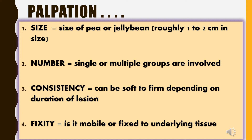Next, we will check for the number of limb node groups involved, which can either be single or multiple groups. The following would be consistency of enlarged limb nodes, which can be either soft to firm depending on the duration of lesion. Lastly, to confirm for fixity to the surrounding tissues, the limb nodes should be carefully palpated to know if they are mobile or fixed to the underlying tissue.